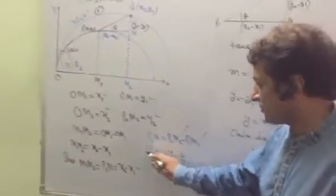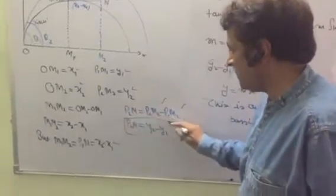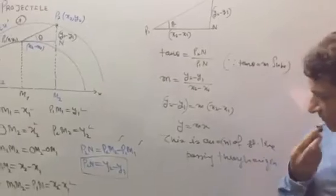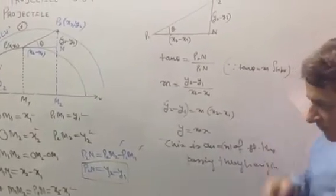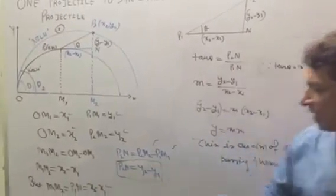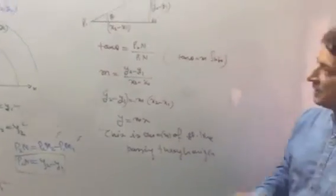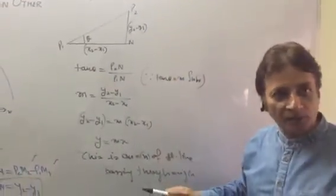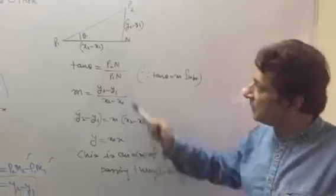So students, we have got P2N, which is y2 minus y1, and P1N, which is x2 minus x1. Look at the triangle P1P2N.